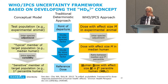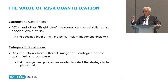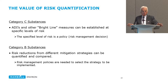We're not quite there yet. But when we have quantification of risk, for Category C substances we can establish bright lines with quantified risk at the bright line — so it isn't just 'safe,' undefined. For Category B substances, we look at different mitigation strategies, quantify how risks change with those strategies, and compare them.